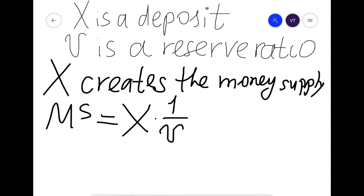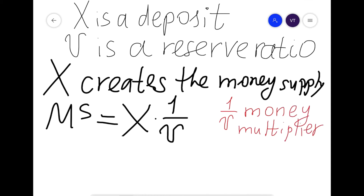In macroeconomics, the term 1/V has a special name: it's called the money multiplier. The money multiplier shows how much money is created out of $1.